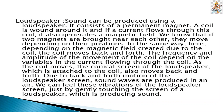Now, in the case of a loudspeaker: sound can be produced using a loudspeaker. It consists of a permanent magnet. A coil is wound around it, and if current flows through this coil, it also generates a magnetic field. Depending on the magnetic field created due to the coil, the coil moves back and forth. The frequency and amplitude of the movement of the coil depend on the variables in the current flowing through the coil.